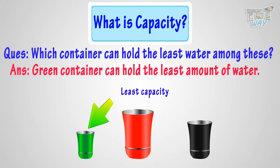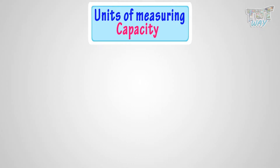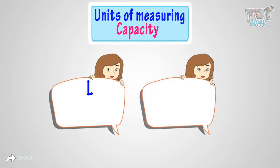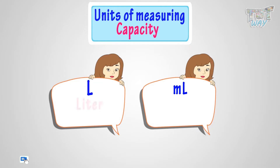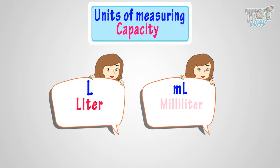Now kids, you know what is capacity. Now, let's learn the units for measuring capacity. Capacity is measured in L or mL, where L is the symbol for liter and mL is the symbol for milliliter.